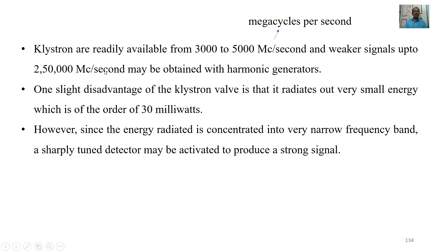Klystrons are readily available from 3,000 to 5,000 megacycles per second, and weaker signals up to 250,000 megacycles per second may be obtained with harmonic generators. One slight disadvantage of the klystron valve is that it radiates very small energy, of the order of 30 milliwatts. However, since the energy radiated is concentrated into a very narrow frequency band, a sharply tuned detector may be activated to produce a strong signal.